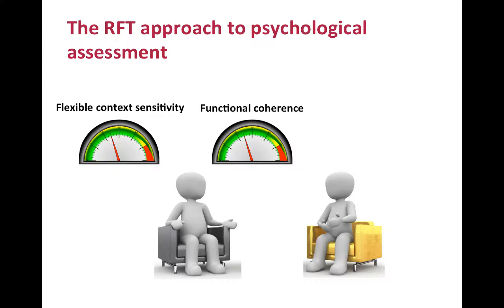Let's remember what we are assessing in therapy based on RFT. Given that the main goals of therapy are to shape flexible context sensitivity and functional coherence, what we want to assess is the client's context sensitivity — how he notices and responds to the various elements of the context — and coherence, or how he makes sense of the different elements of his experience, including the different elements of the context and his actions.